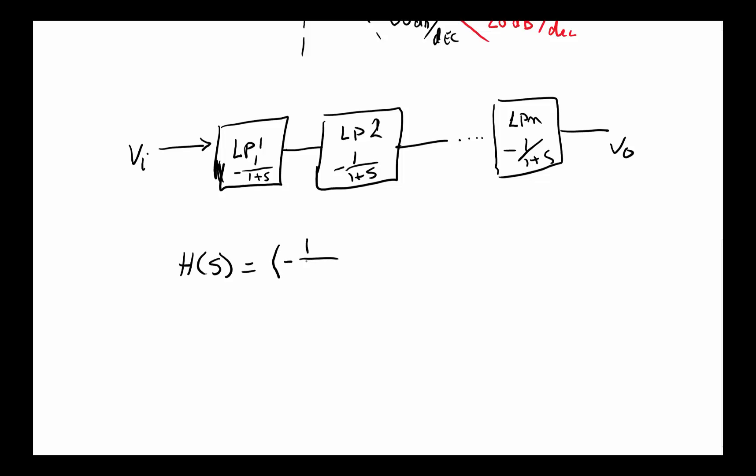basically minus one over one plus S, times minus one over one plus S, on and on and on till we get to the last one. So we're going to have N of these things in a row.